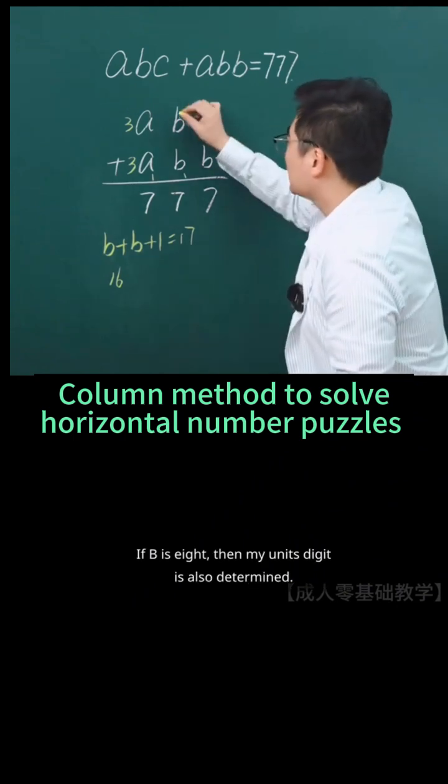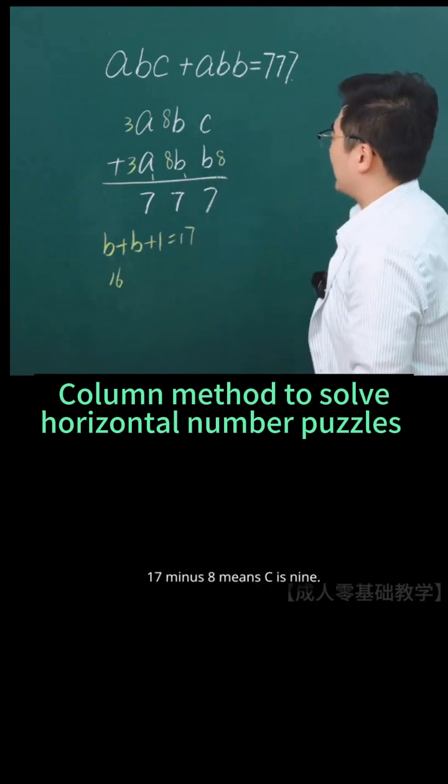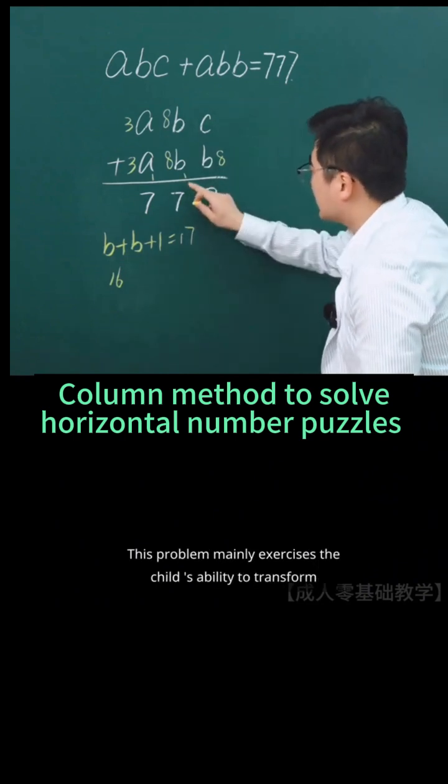If B is 8, then my unit's digit is also determined. What number added to 8 gives 17? 17 minus 8 means C is 9.